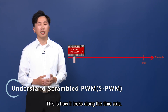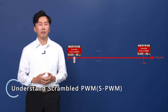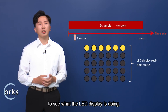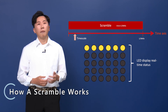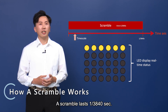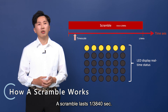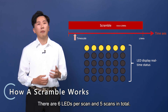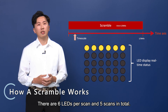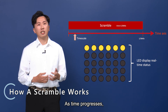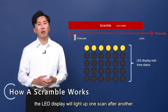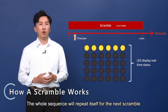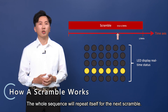This is how it looks along the time axis. Now let's zoom in on a scramble to see what the LED display is doing. A scramble lasts 1/3840th second. There's a 6×5 LED display at the bottom — 6 LEDs per scan and 5 scans in total. As time progresses, the LED display will light up one scan after another, and the whole sequence will repeat itself for the next scramble.